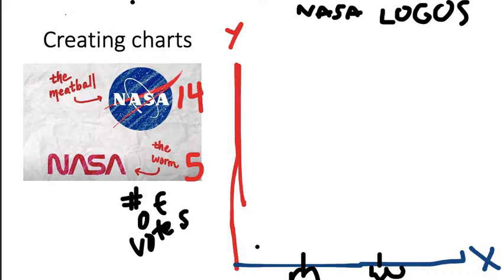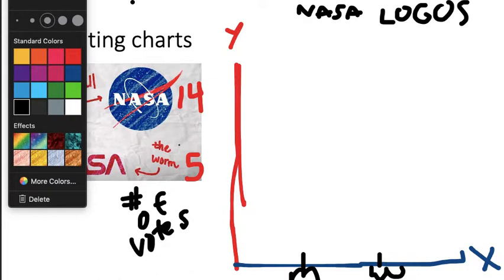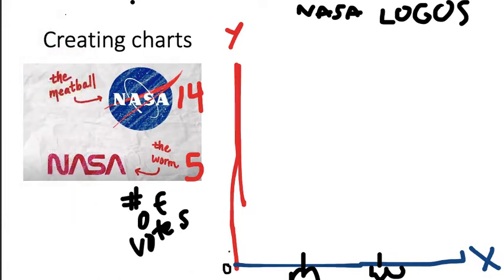14 students voted for the meatball logo, 5 voted for the worm. But the thing is, I do not want to skip count by 1 - 1, 2, 3. No, I don't want to do that. That's going to take way too long. I want you to think about a number that I could skip count by so I could put it on the y-axis that might be a little bit better. What if I tried twos? That might be a little bit better, because 14 is not too much of a large number. If I skip counted by tens, the first bar would be 10, then it would be 20, 30, 40. That would just be way too much space already, and that doesn't make my graph look good.